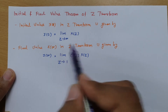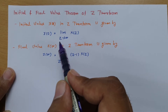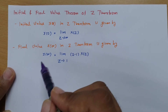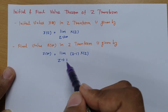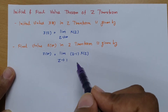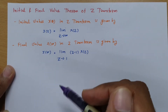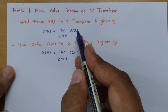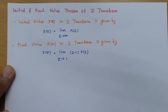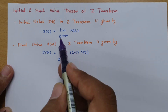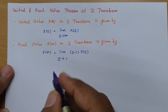So basically, the initial value X(0) is calculated as lim(Z→∞) X(Z), and the final value X(∞) is calculated as lim(Z→1) (Z−1)·X(Z). Here, X(Z) is the Z-transform of signal X(n), and these formulas will be utilized for initial value and final value calculations.